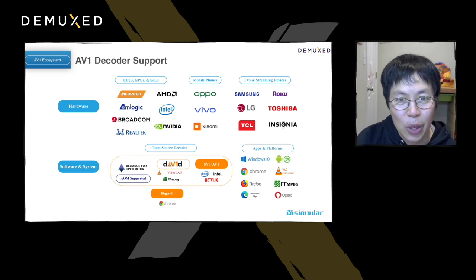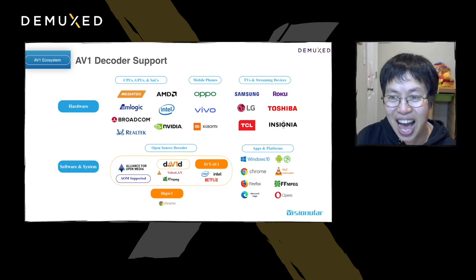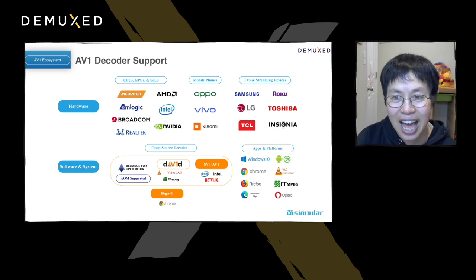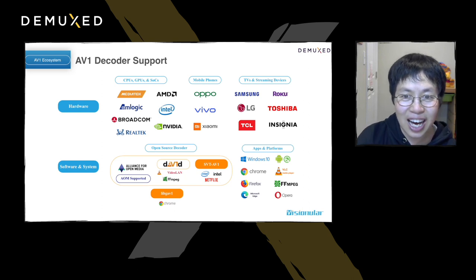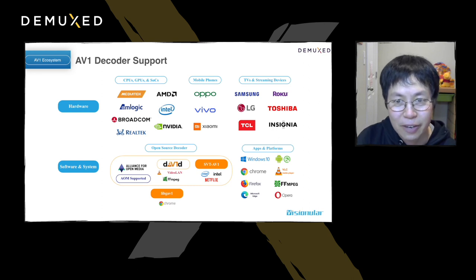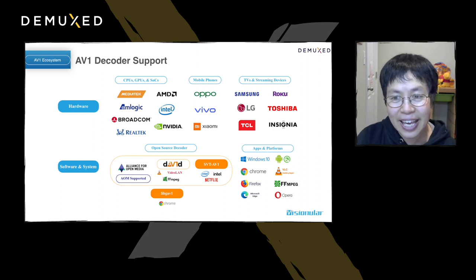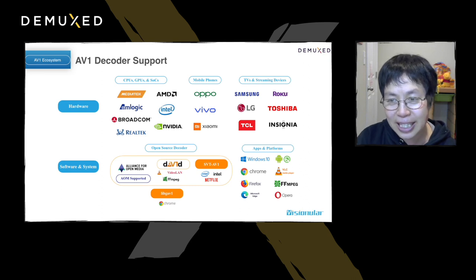We want to look at the current hardware support for AV1, because the appearance and wide deployment of hardware decoders is an indicator of the build-up ecosystem for any new video codec standard. Based on public information collected, we present the current status of hardware decoder support for AV1. Listed here are all the providers in different categories: SOCs, mobile phones, TVs, and set-top boxes. All of these either already support AV1 or have made announcements to support AV1 in the very near future. With all this hardware support coming along, there is great potential for AV1 in real applications.